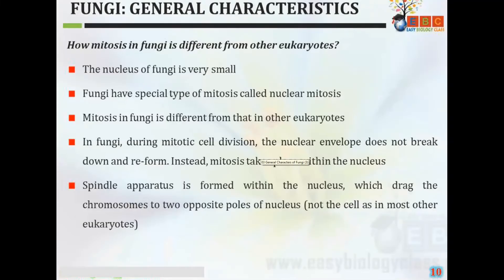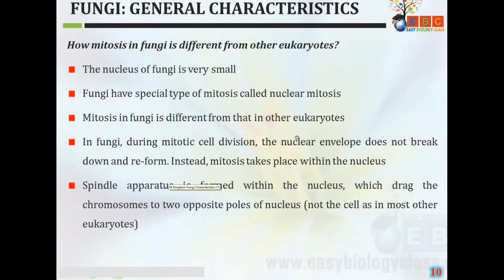How is mitosis in fungi different from other eukaryotes? The nucleus of fungi is very small. Fungi have a special type of mitosis called nuclear mitosis. Mitosis in fungal cells is different from that of other eukaryotes — during mitotic cell division, the nuclear envelope does not break down. In general eukaryotic organisms, during mitosis the nuclear envelope breaks down and is then reformed. Instead, in fungi mitosis takes place within the nucleus.